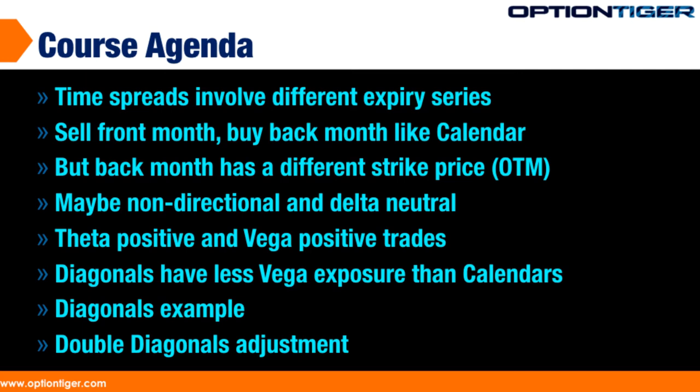The diagonal is also a theta positive trade and a vega positive trade. That characteristic of a time spread will still be there in a diagonal. But diagonals have less vega exposure than calendars because the strike that you buy in the back month is out of the money.